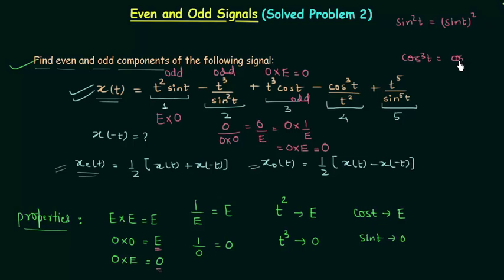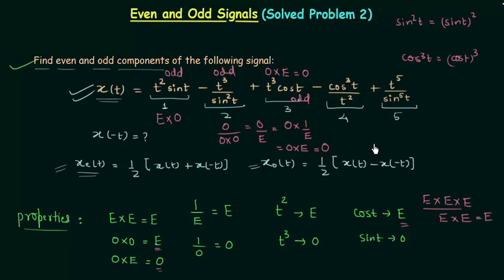Fourth term: cos³(t)/t². cos³(t) = cos(t) × cos(t) × cos(t) = even × even × even = even. t² is also even. So we have even/even = even × (1/even) = even × even = even. Therefore cos³(t)/t² is part of the even component.